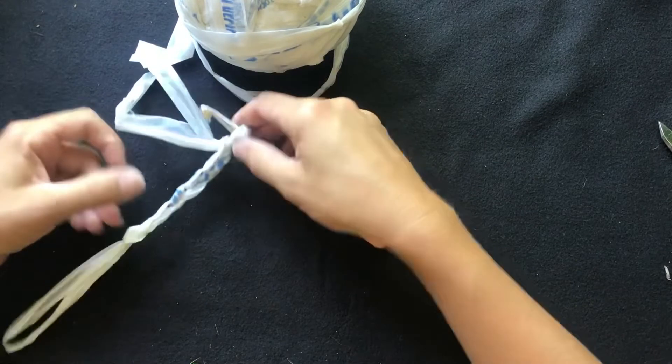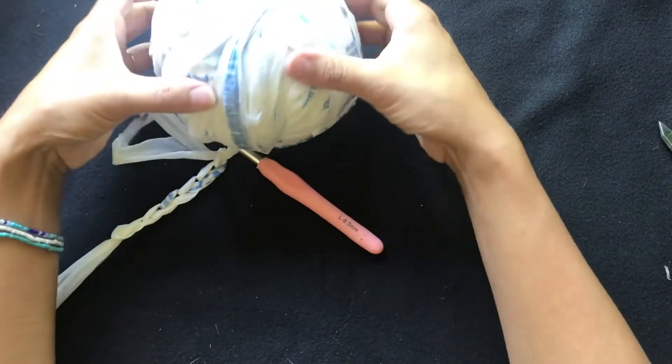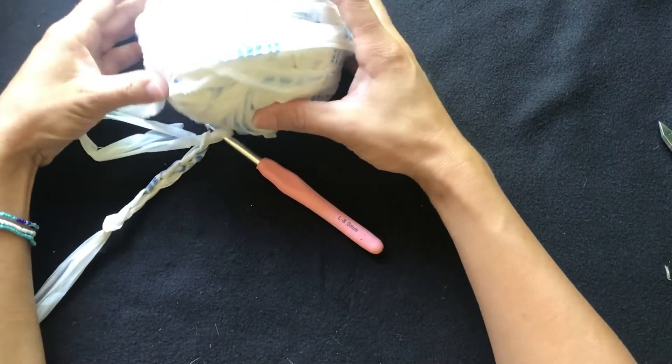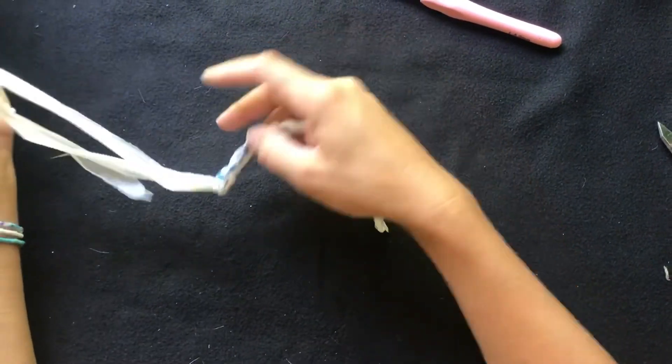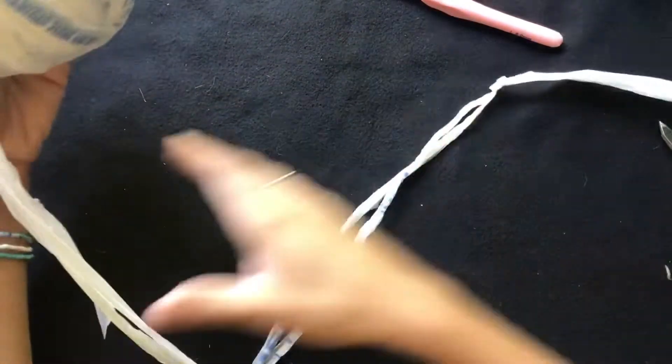So there you are, you have plastic yarn or plarn. So super simple and easy to make. I do like to ball up and keep colors separately just so I can add more character and different things into each project. But that is how you make the plarn yarn.